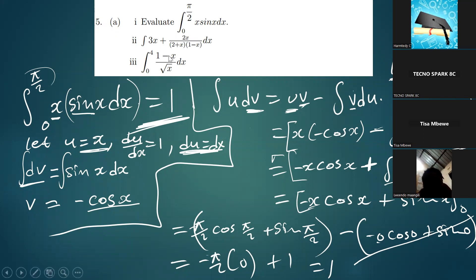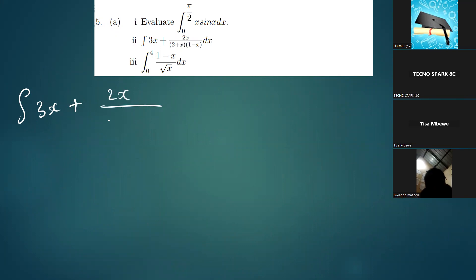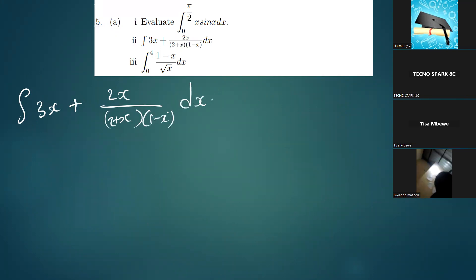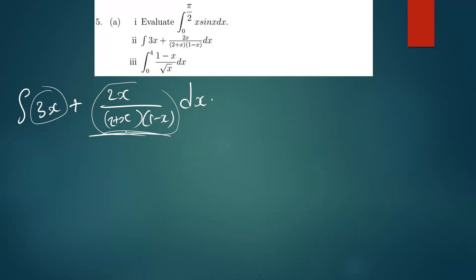Moving to part 2: we need to integrate 3x over (2+x)(1−x) dx. This is an indefinite integral, so we add a constant k at the end. This is not straightforward because it requires partial fractions. The first step is to express the expression in its partial fraction form.